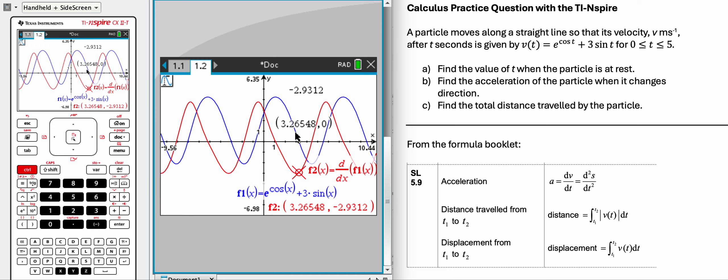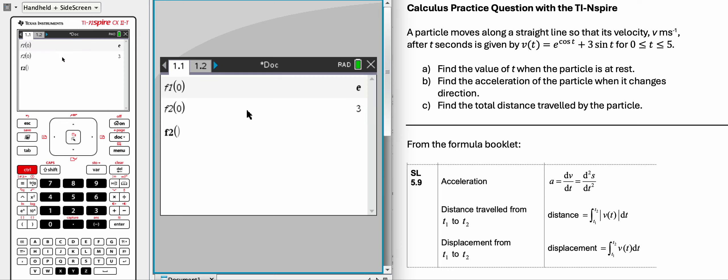That could work. I'm just going to memorize the first few digits, 3.26548, and it's negative 2.93 to three significant figures. So that's another way to do that.